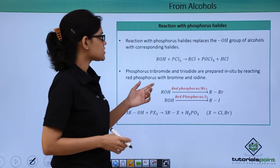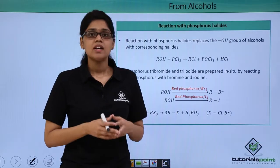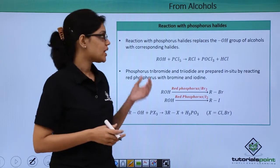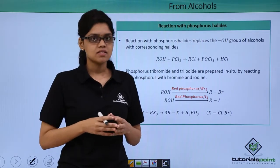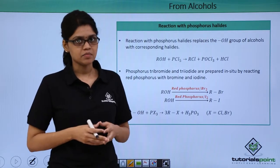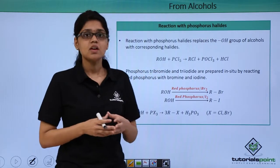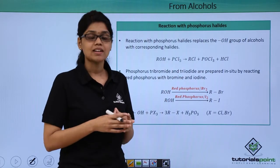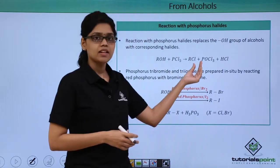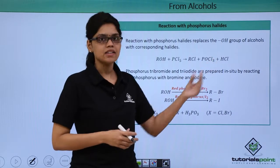The first reagent that we are going to discuss here is phosphorous halides. In this reaction as well, when alcohol reacts with phosphorous halides, the OH group in alcohol gets replaced by corresponding halides. As we can see in the reaction, when ROH reacts with PCl5, the products that we get is an alkyl chloride RCl along with POCl3 and HCl.